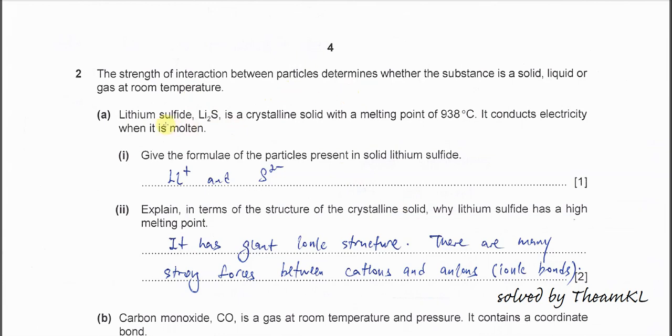Part a. Given lithium sulfide and its melting point is 938°C. When the melting point is high, we know that the structure most likely is giant. It's either giant molecular, giant ionic, or metallic. It depends on the compound.